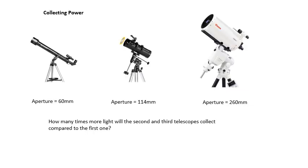Collecting power. I think I mentioned this in the last video. Look at these three telescopes, look at the diameter of the aperture. Obviously the bigger the aperture the more light they will collect. And the amount of light that they collect will be proportional to the diameter squared, because it will be proportional to the area, which is π r². Very easy. How many times more light will the second and third telescopes collect compared to the first one? Work it out for yourself.